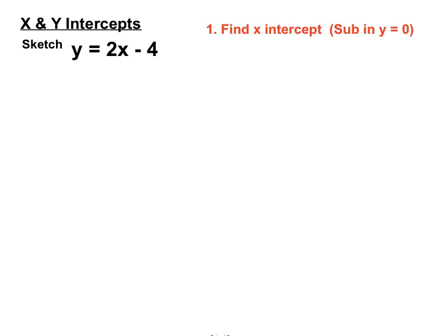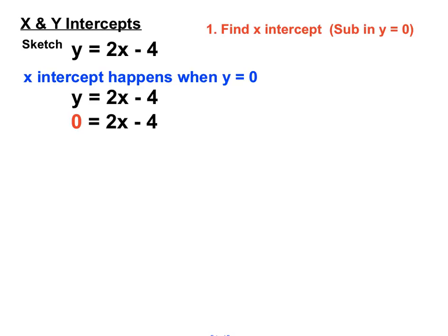We can find an X intercept—that's where the line will cross the X axis—by subbing into the rule there y = 0. That'll find us an X intercept, so let's do that first. The X intercept happens when y = 0. It's kind of like opposite land here, and so there's the rule. If we sub in y = 0, which is replacing the y with a 0 there, and we solve the resulting equation here.